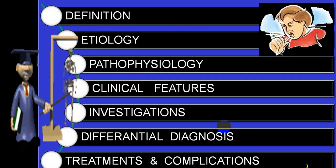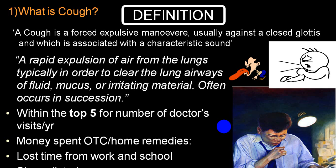As routine, we will be discussing under the headings of definition, etiology, pathophysiology, clinical features, investigations, treatment, differential diagnosis, and complications. Cough is a forceful expulsion against a closed glottis, associated with a characteristic sound. It is also described as a rapid expulsion of air from the lungs, typically to clear the airways of fluid, mucus, or any irritating material including chemical fumes, and often occurs in succession.